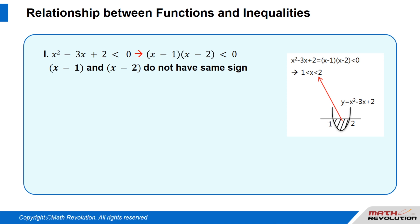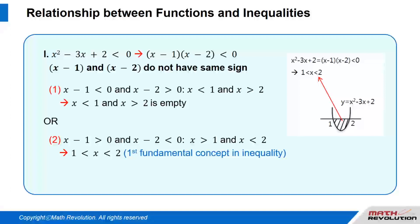This means that the factors (x minus 1) and (x minus 2) do not have the same sign. That is: x minus 1 is smaller than 0 and x minus 2 is greater than 0, or x minus 1 is greater than 0 and x minus 2 is smaller than 0.